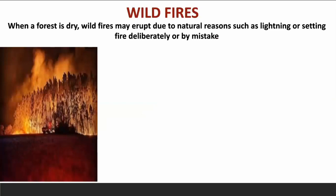Wildfires. When a forest is dry, wildfires may erupt due to natural reasons such as lightning, or by setting fire deliberately or by mistake. One of the most recent wildfires was observed in Australia — the bushfires, which are an uncontrollable fire in a wooded or grassy area. Because of these bushfires, 46 million acres of land were burnt and 34 people died. The biggest destruction to biodiversity was observed in the Amazon wildfires in November 2019, when significant portions of forest in Brazil and Bolivia were burnt.